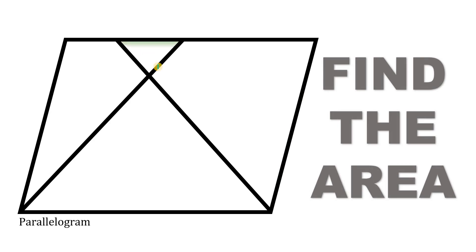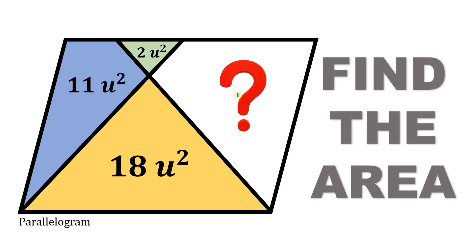Now the area of this small triangle simply equals 2 square units. The area of this big triangle simply equals 18 square units. Now the area of this quadrilateral is 11 square units. Now the question is: what is the area of this region?